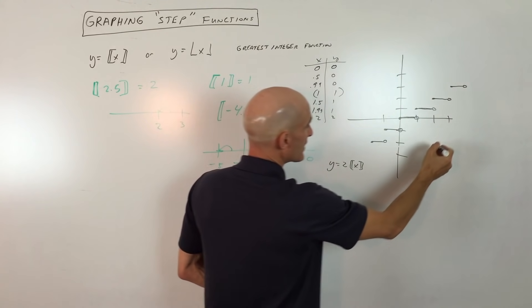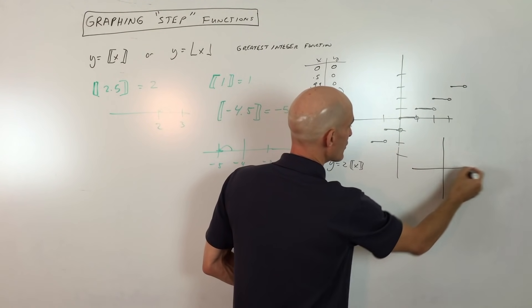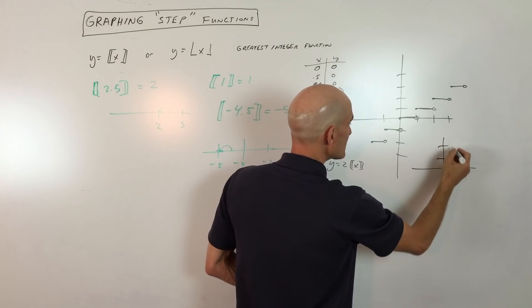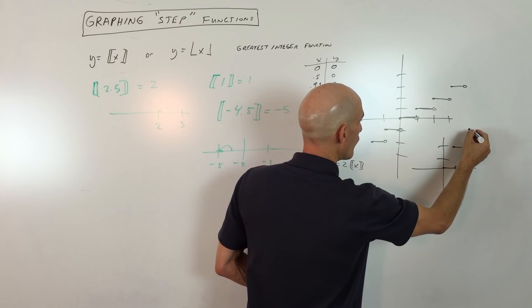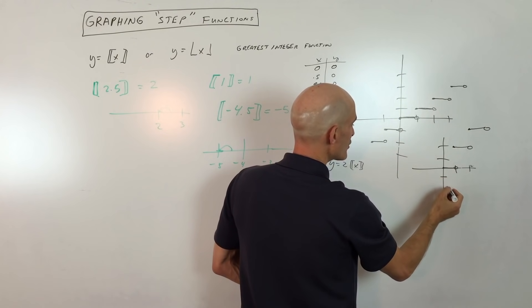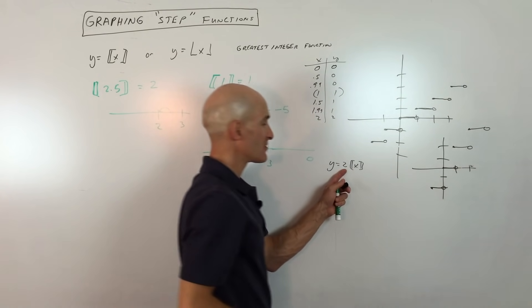So basically what's going to happen now is instead of these stairs going up one each time they're going to go up two. So if I could sketch that, let's see I'll put it right down here. It's going to look something like this. Now you're going to jump up to two, then you're going to jump up to four, and here you're going to jump down to negative two. So it's a vertical stretch by two, we're multiplying all the y values by two.